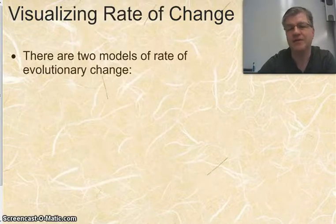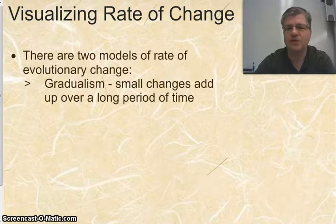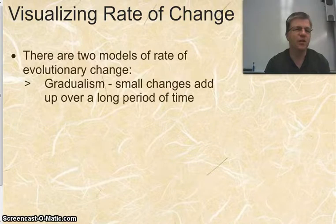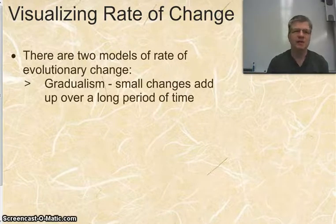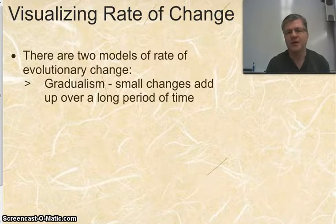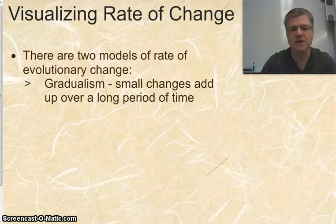As we talk about the rate of this change, there are two different models that kind of disagree with each other. One model is called gradualism, and gradualism says that all these changes in species are very slow changes. It's a bunch of little changes over very, very long periods of time, leading to what we see as big changes. So going from something like a small mouse-sized mammal to something like an elephant, over something like 70 million years, would be a whole bunch of very tiny changes over that very long period of time.